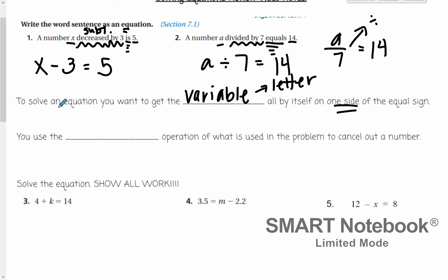So in order to get rid of that plus 4, we use the inverse operation, which just means opposite, of what's used in the problem to cancel out a number. So if we have a plus 4 in the problem, we're going to use minus 4 to get rid of it. If we have divide by 4 in the problem, we're going to use times 4 to get rid of it. Remember, addition and subtraction are inverse operations, and multiplication and division are inverse operations.